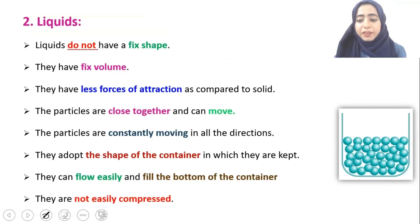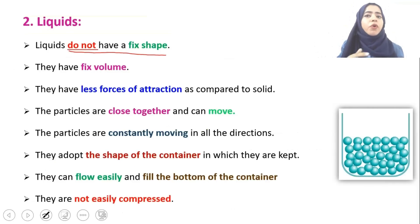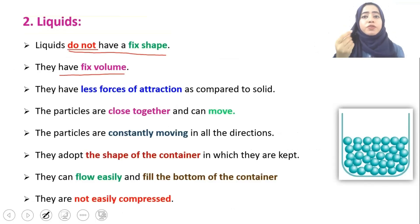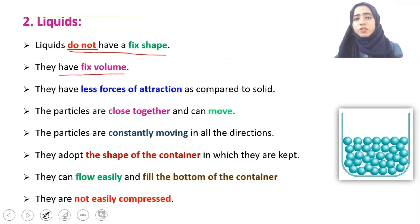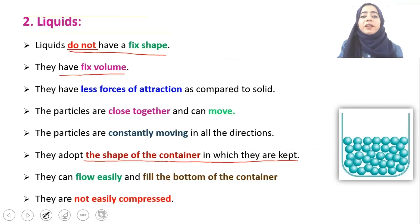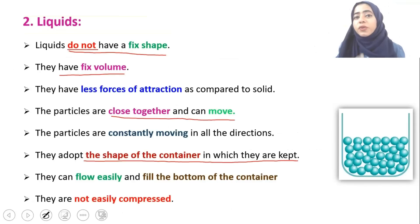The second state is liquid. Liquid does not have a fixed shape but it has a fixed volume. For example, one liter of water has a fixed volume, but its shape changes depending on the container — it takes the shape of a bottle or a glass. Liquid particles are a little closer together with some distances in between them.